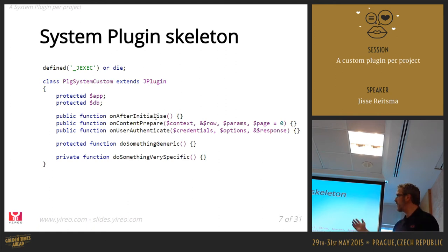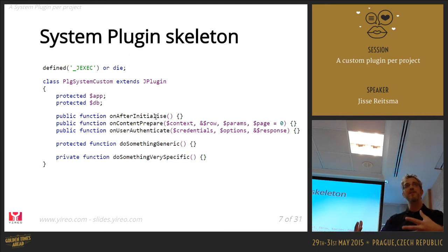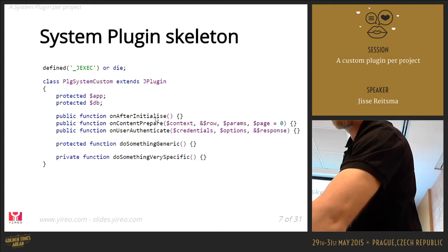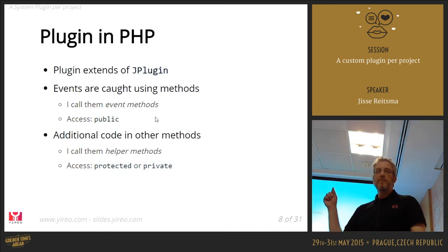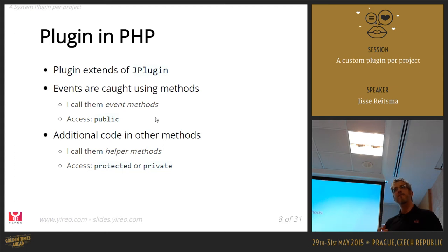By choosing access modifiers — public, protected, and private — carefully, you're making a declaration about your class. Public methods are the interface to the outside world. Protected properties are a communication to other extension developers: here's some reusable code. Private declares: I created this for myself only and it's not usable by others. I always refer to the event-handling methods as 'event methods' and all other methods as 'helper methods.'